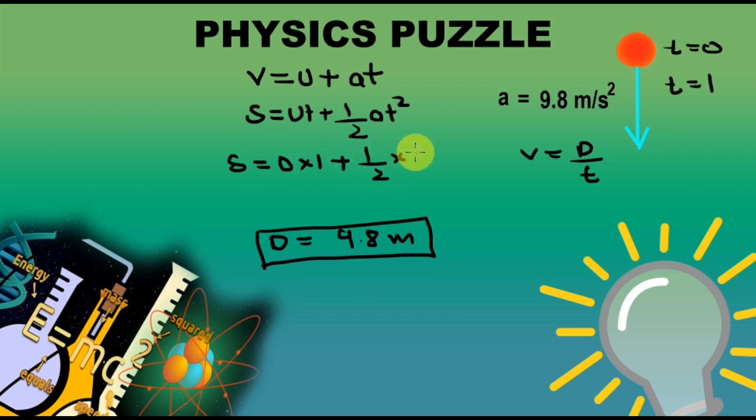acceleration is 9.8 meter per second square, and time is again 1 second square. s is equal to, this is 0, half times 1 square is 1, 9.8.